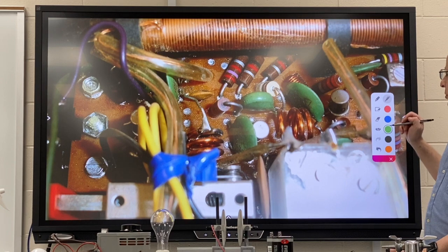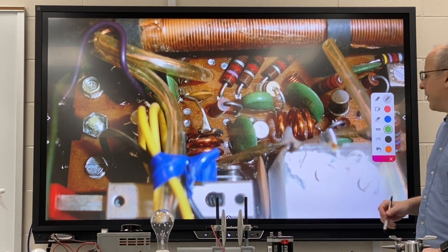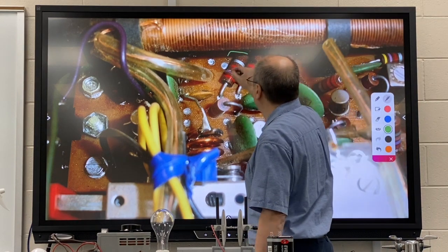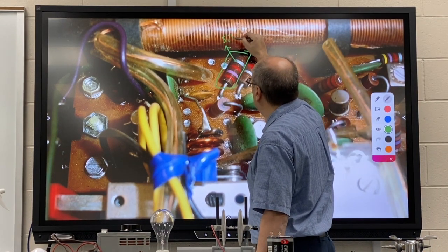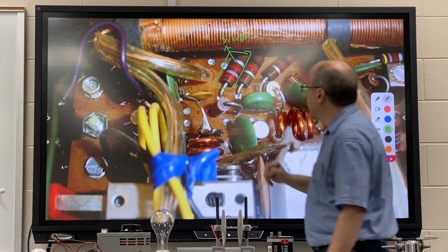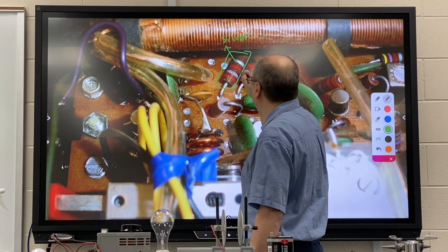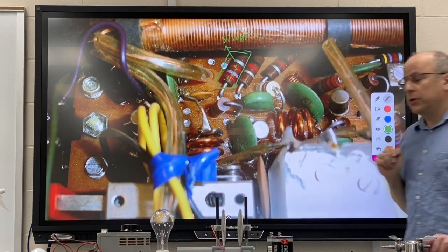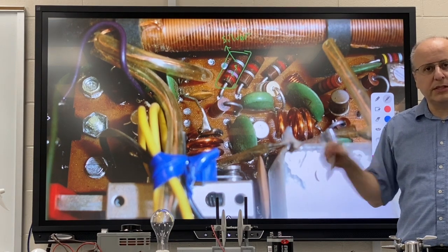When you see your resistors one thing you have to be able to do is figure out where do I start reading it from. If you look at this one the first thing you want to find is the silver or gold band. The silver is down there so this would be one, two, three. So it's red, purple, red. Two, seven, zero, zero.